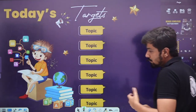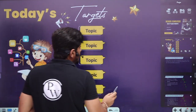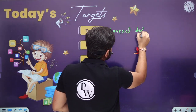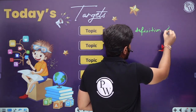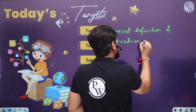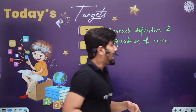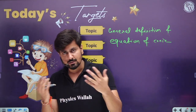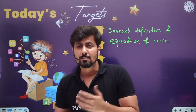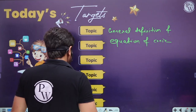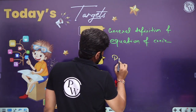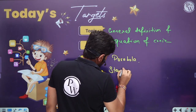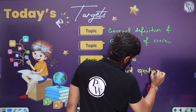In this session we are going to be learning about the general definition and equation of conic — how to determine whether an equation represents a circle, parabola, hyperbola, or straight line. Then we are going to start parabola with the standard equation of parabola.